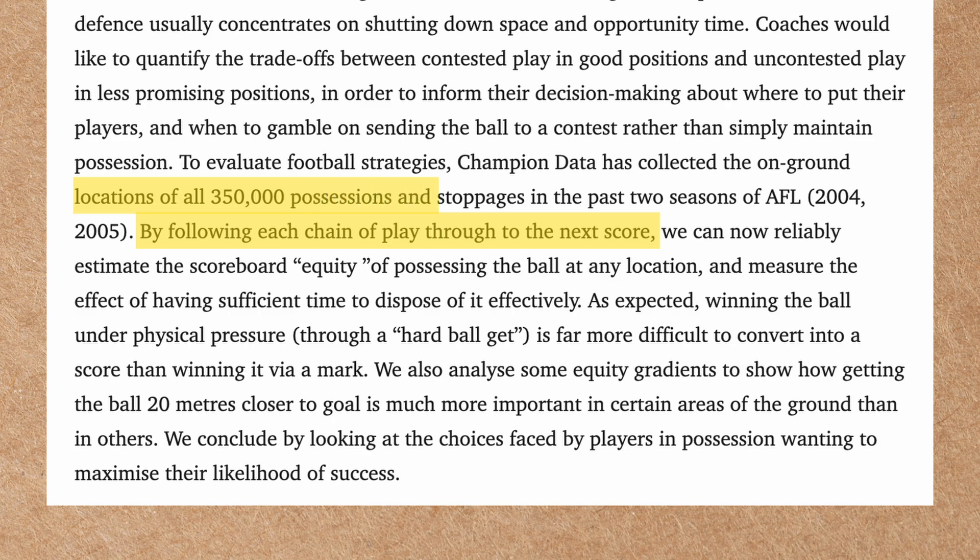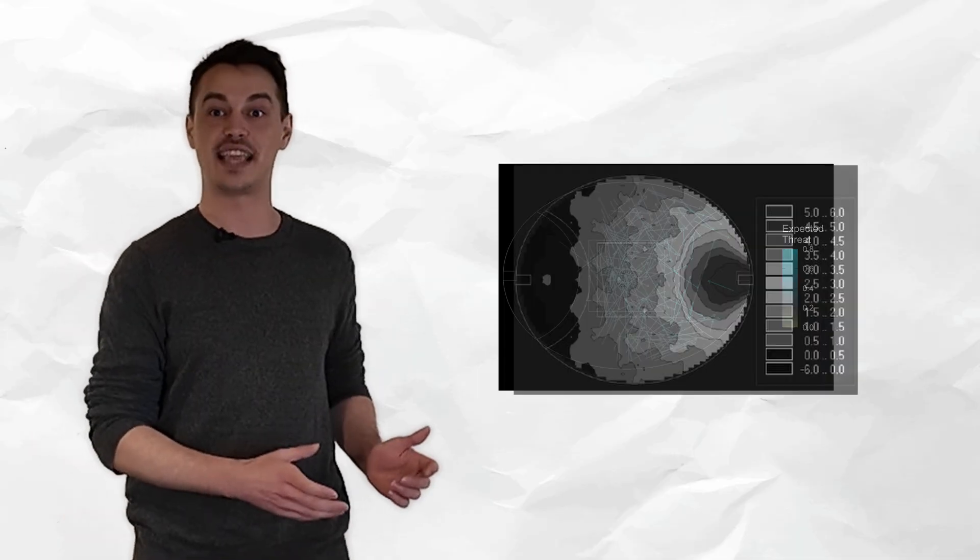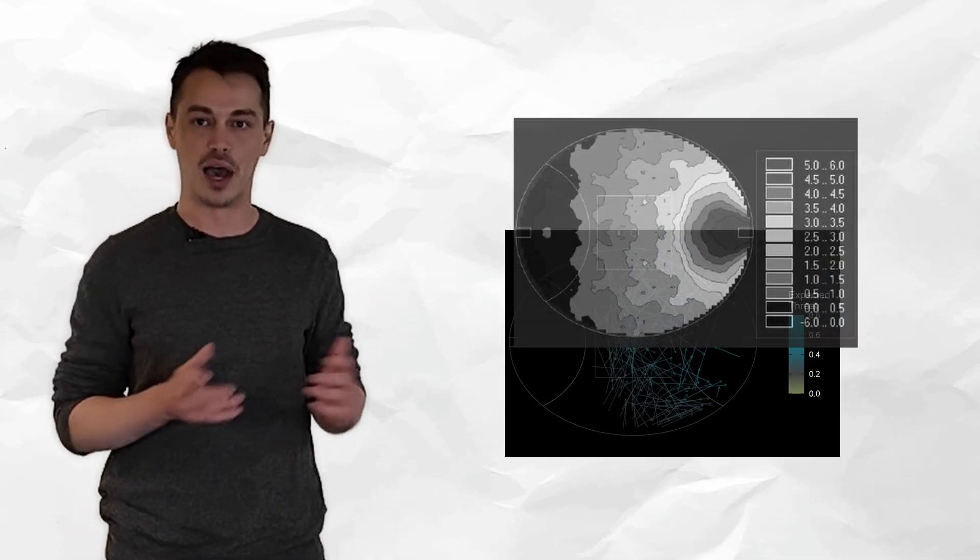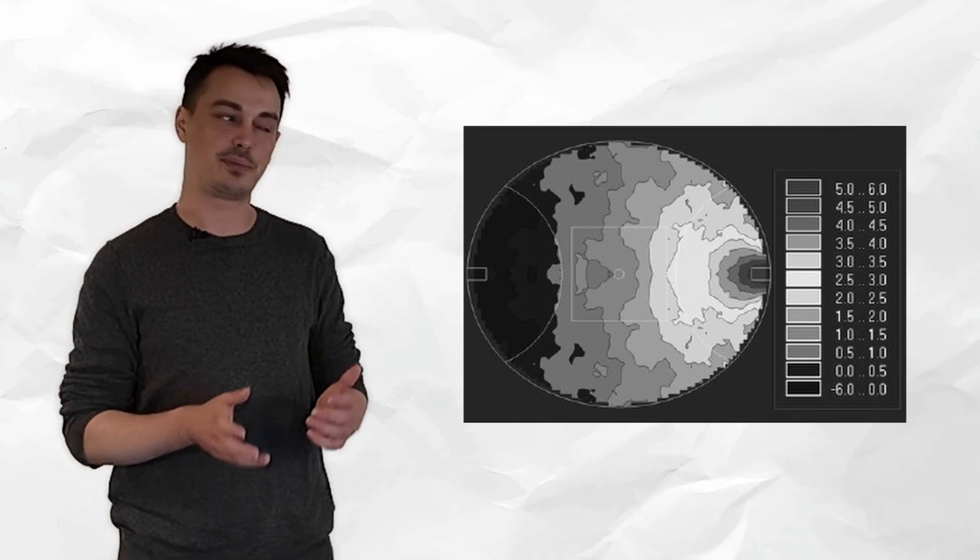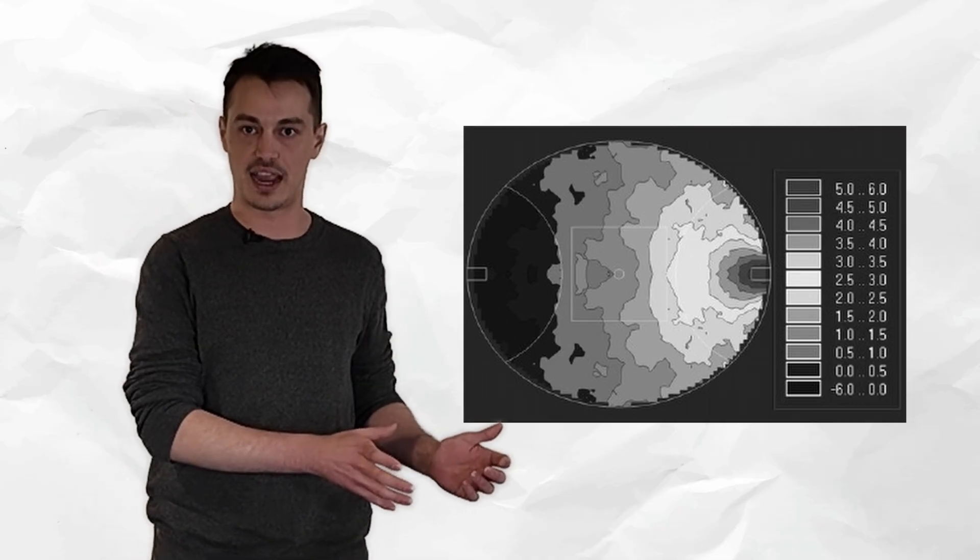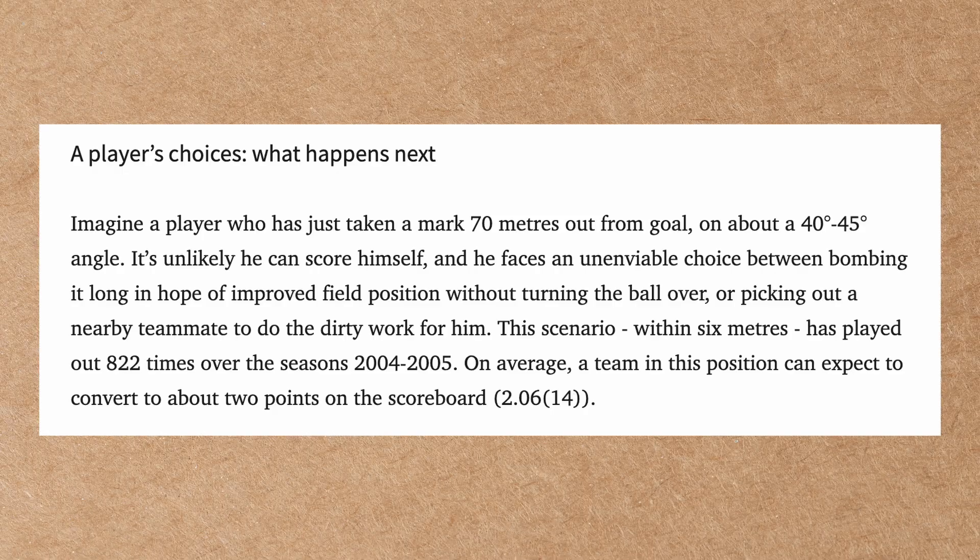Darren did this by following each chain of play through to the next score using the on-ground location of 350,000 possessions and stoppages. Which sounds very similar to what Liam has done, and if we overlay Liam's work with Darren's set plays, i.e. marks and free kicks, and then his directed map, i.e. general play, there does seem to be some similarities, mostly being that the further the ball is up the ground, the more likely it is to lead to a score.